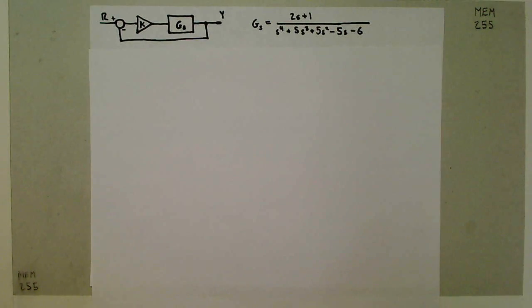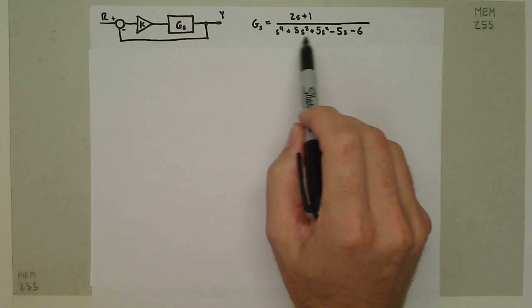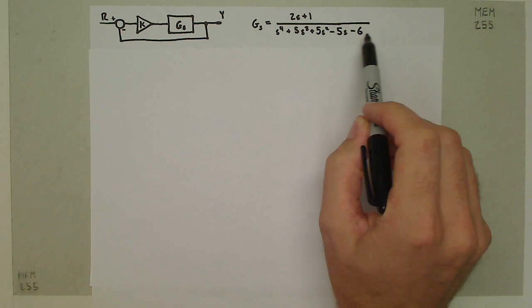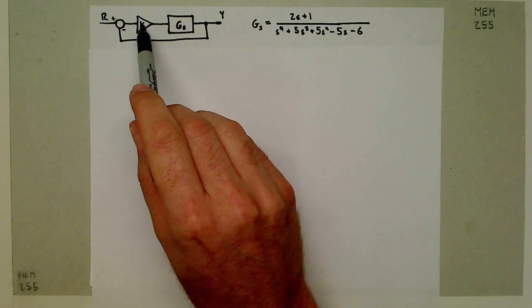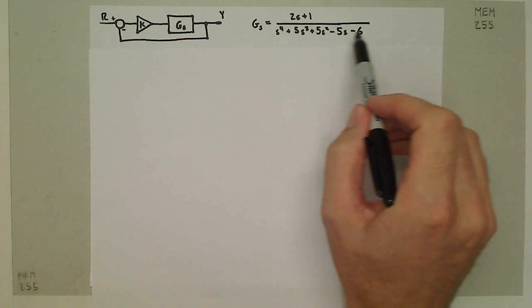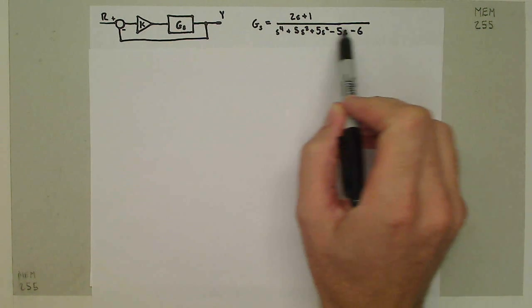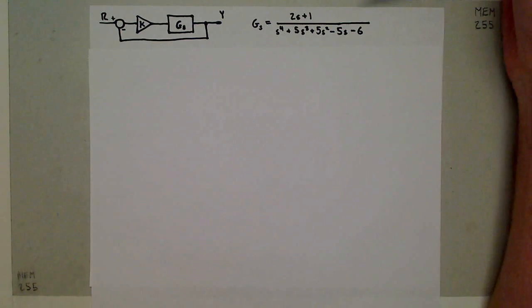This video is all going to be about using the Routh-Hurwitz tabular method to figure out the range of K's that determine stability for a system. I have a system here with this plant G_s, which has 1, 0, and 4 poles, and this forward gain K. Now, we know the system is already unstable because right from the get-go, if the system has any negative coefficients, we know it's unstable. So what I want to see is what are the range of K's that make this stable.